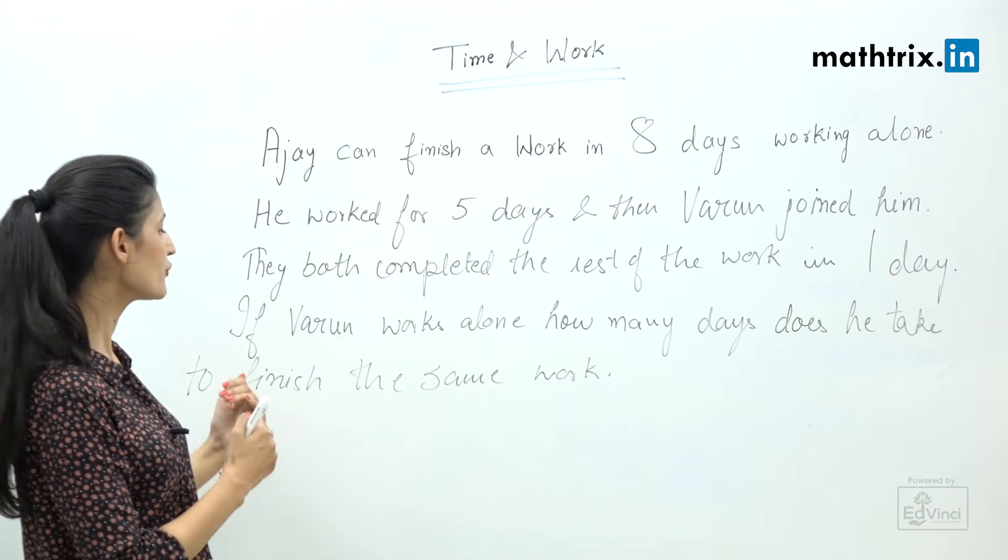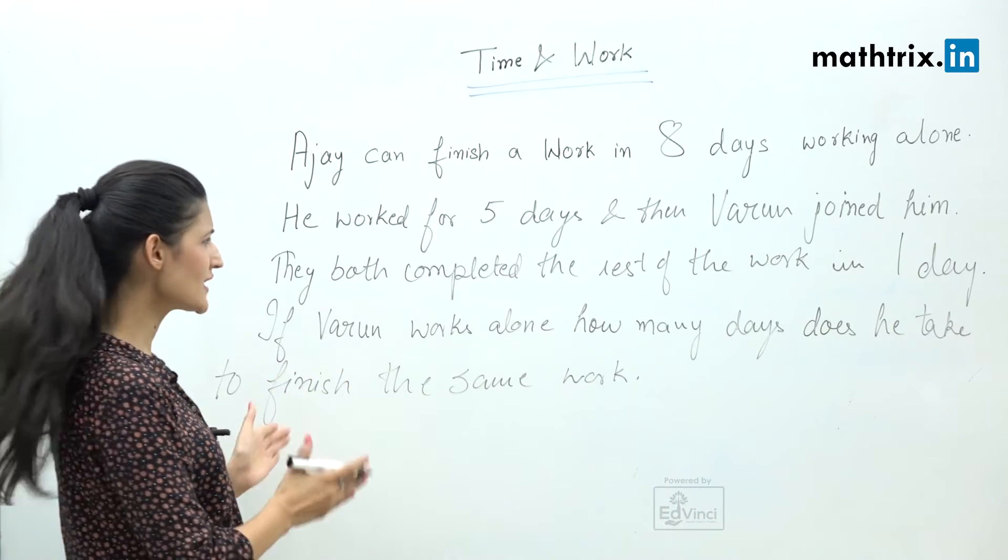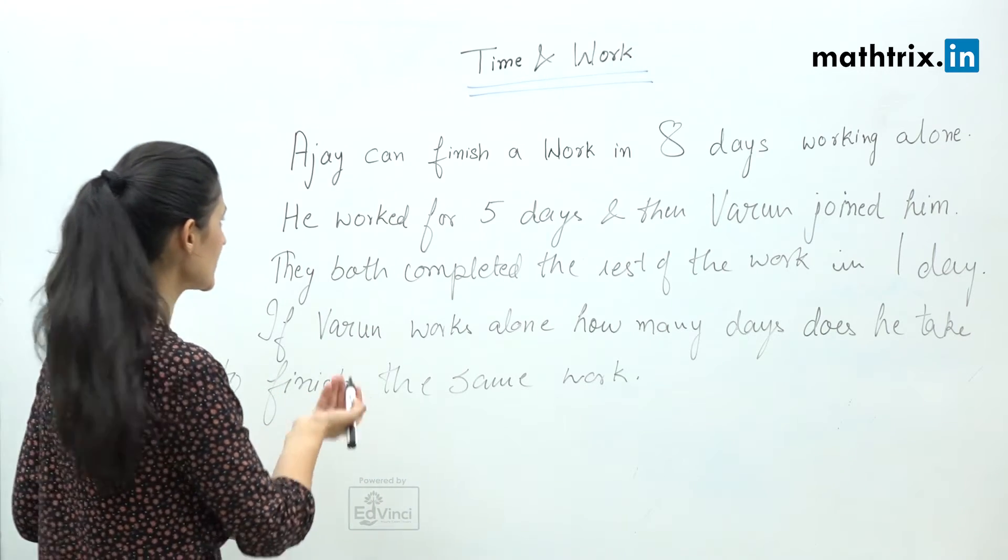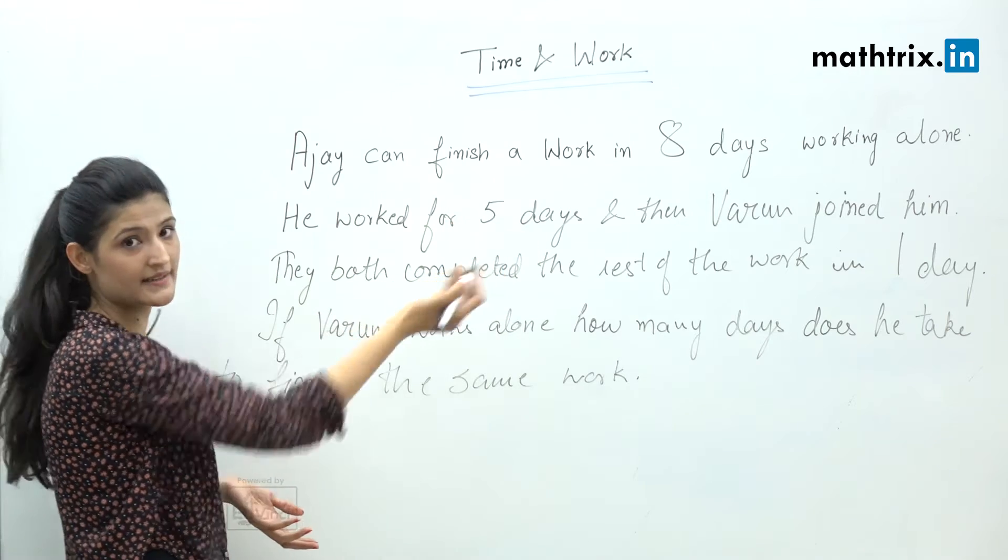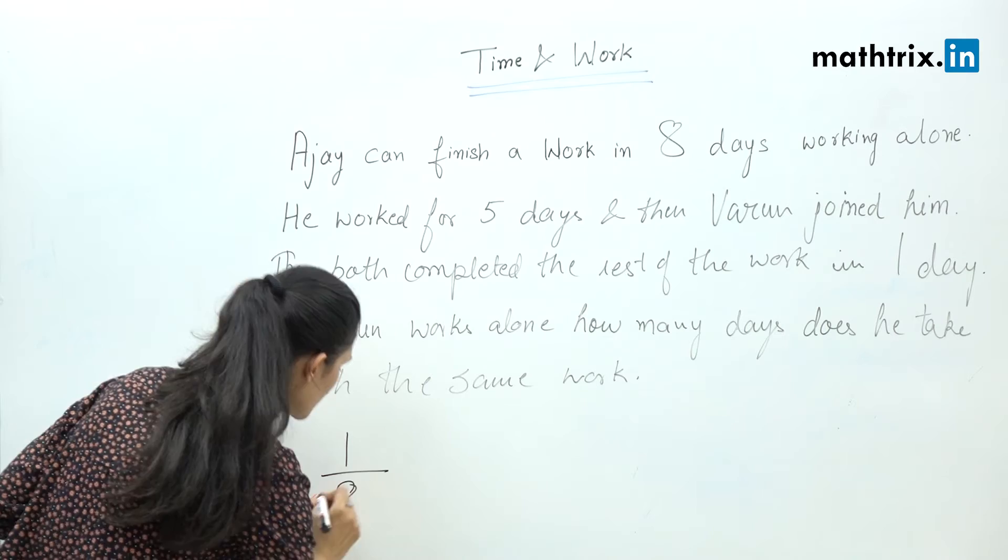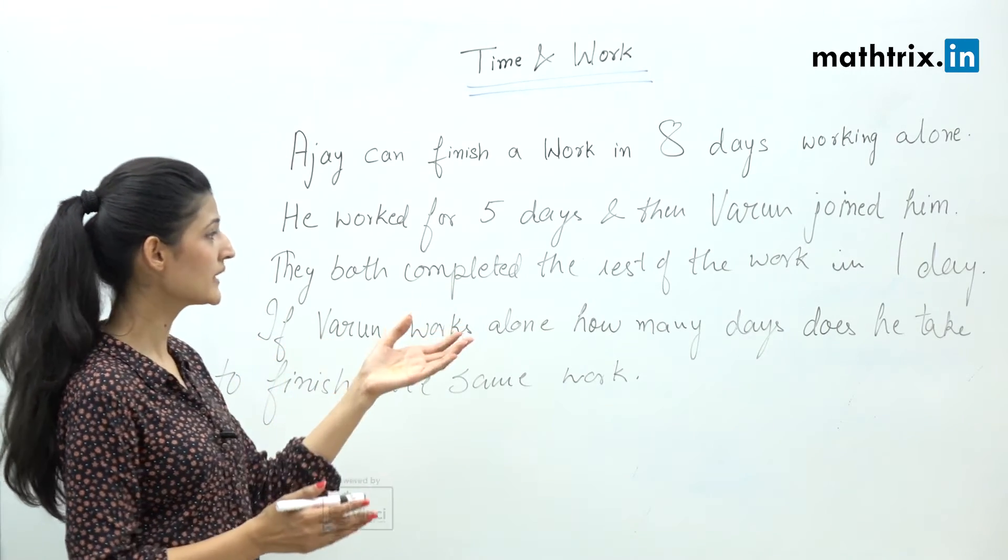People with conceptual knowledge will start solving this question with the help of the one day work concept. We know that Ajay can finish the work in 8 days, which means in one day he can work 1/8. Since we don't know how many days Varun will take to complete the work, we assume it is x, so his one day work is 1/x.